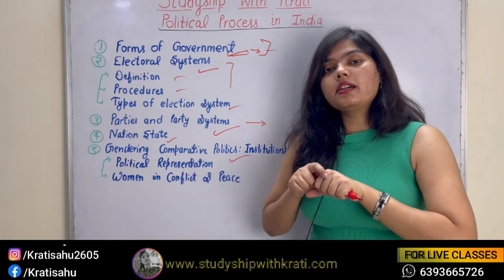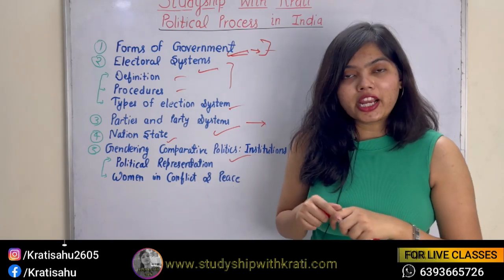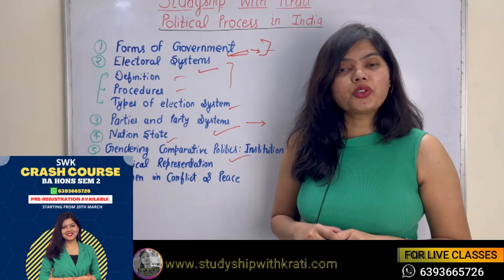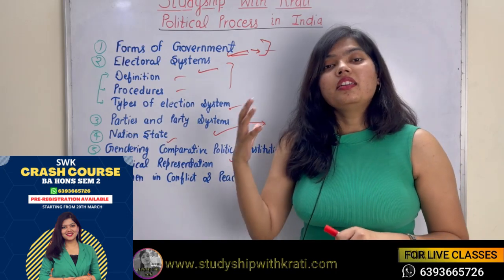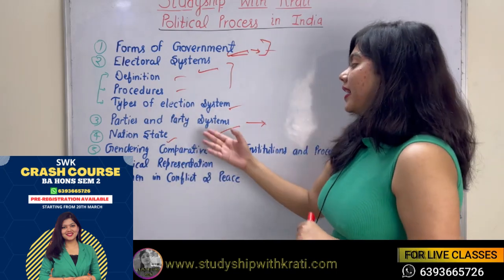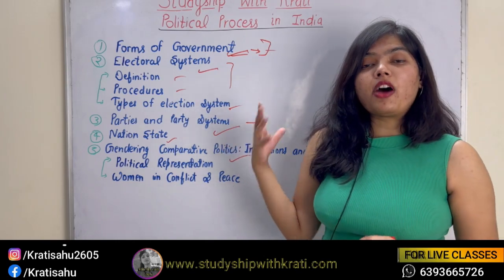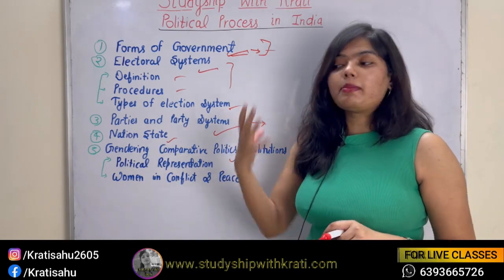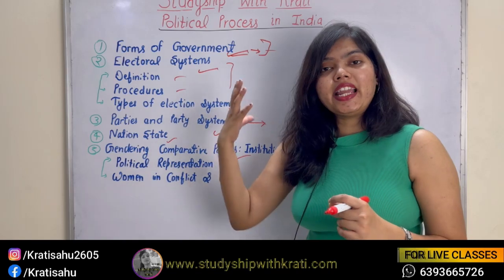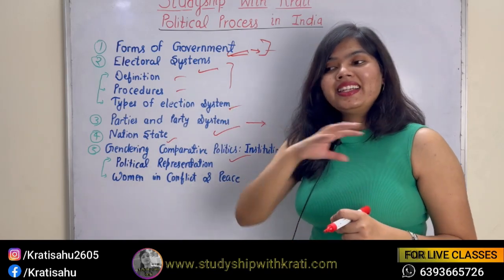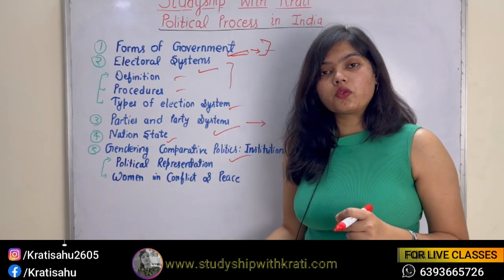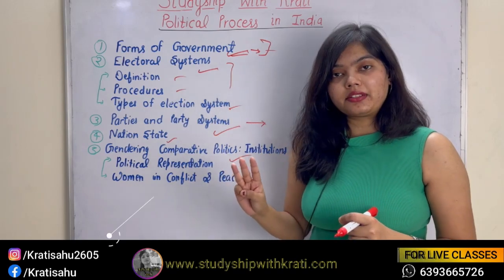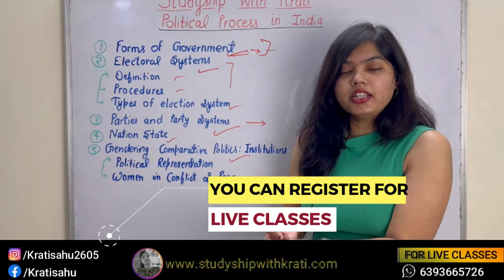For Parties and Party System in India, my suggestion is to check Class 12 Political Science Part 2 — 'Politics in India since Independence' — it will give you a lot of insight. Topics include: era of one-party dominance, Congress system, coalition system, NDA, UPA. Also very common questions: one-party system, two-party system, multi-party system — give countries as examples and explain why they opted for that model.